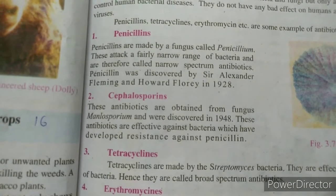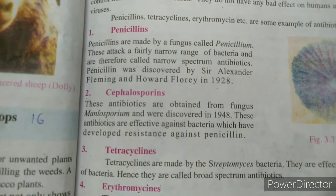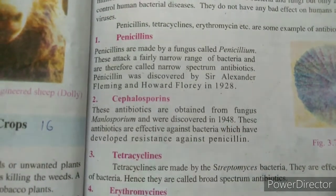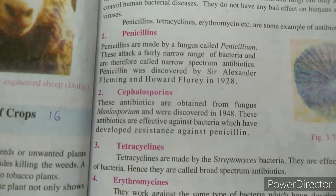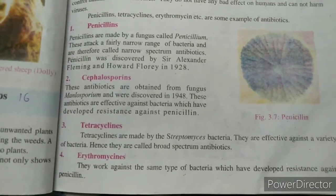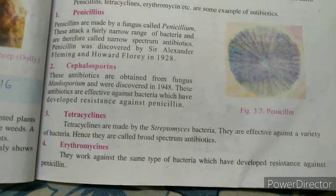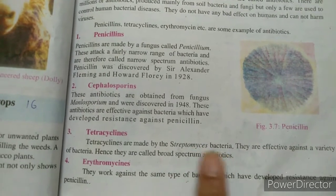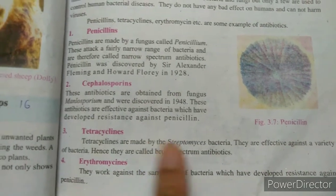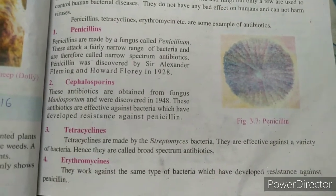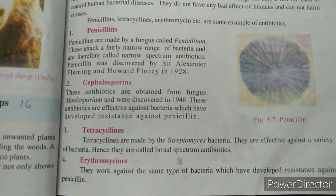Cephalosporins are antibiotics obtained from the fungus Melosporium and were discovered in 1948. These antibiotics are effective against bacteria which have developed resistance against penicillin. Tetracyclins are made by the Streptomyces bacteria. They are effective against a variety of bacteria and are therefore called broad spectrum antibiotics.